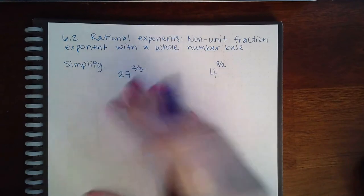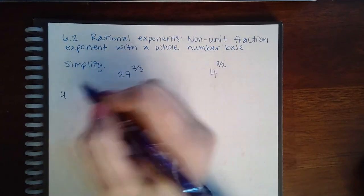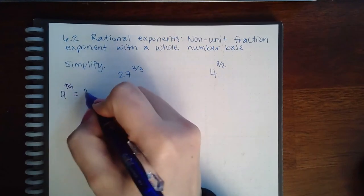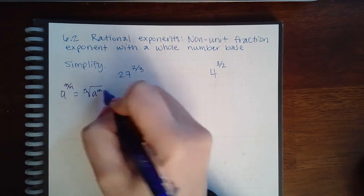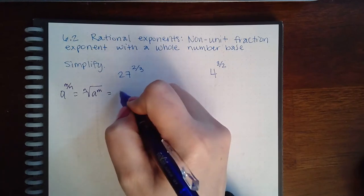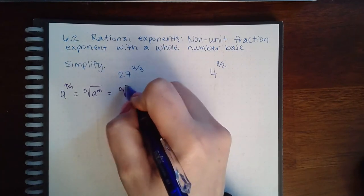And so for these, it is going to be helpful to use the second version of the form. So we know that the formula goes like this, and you could have the nth root of a to the m, or you can have the nth root of a raised to the power m.